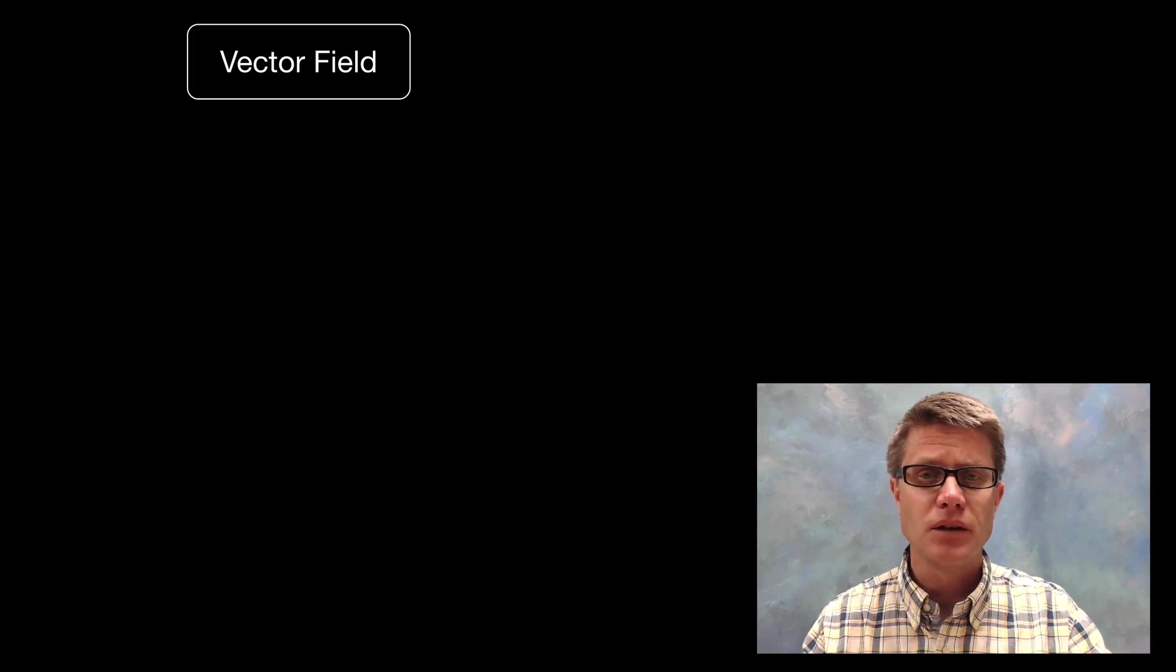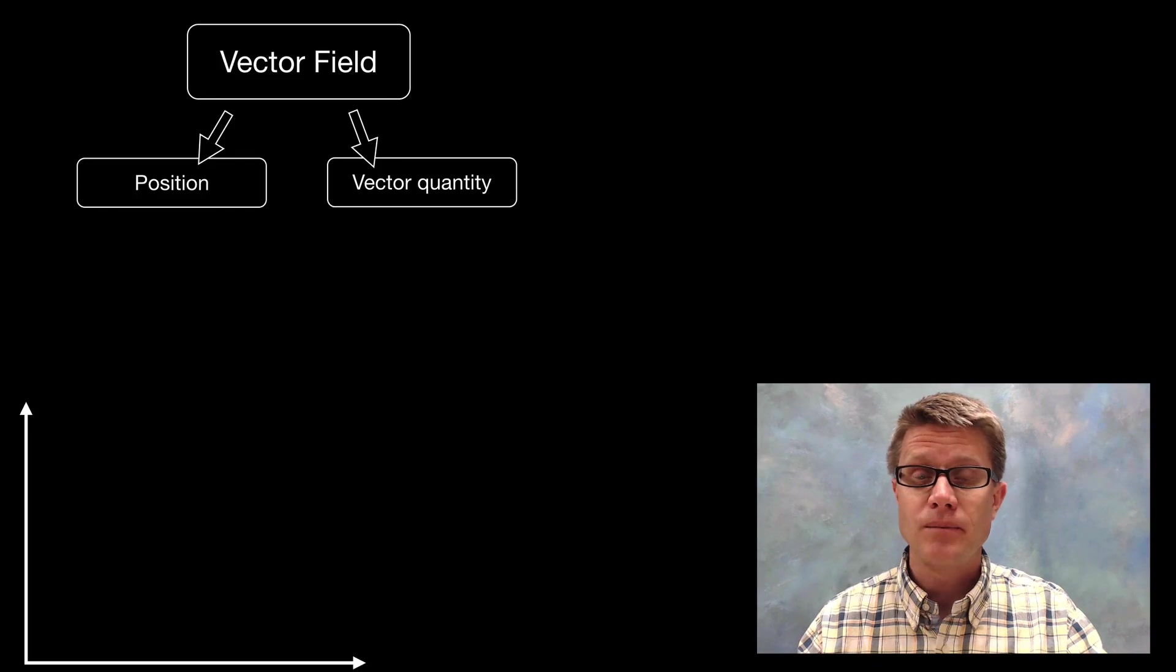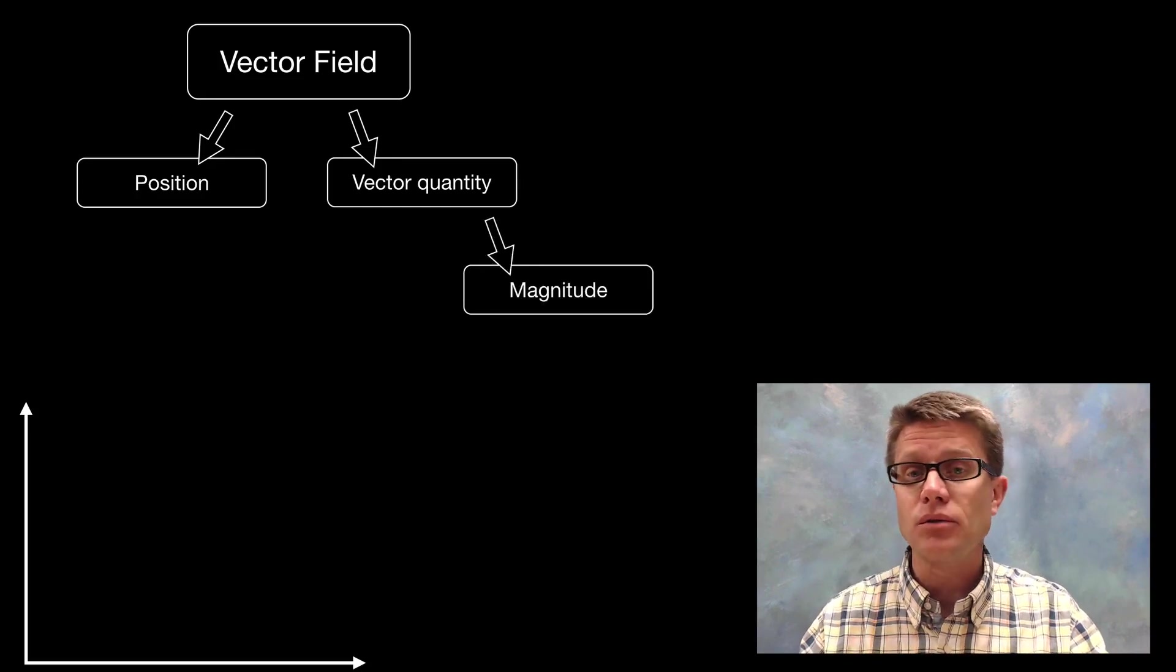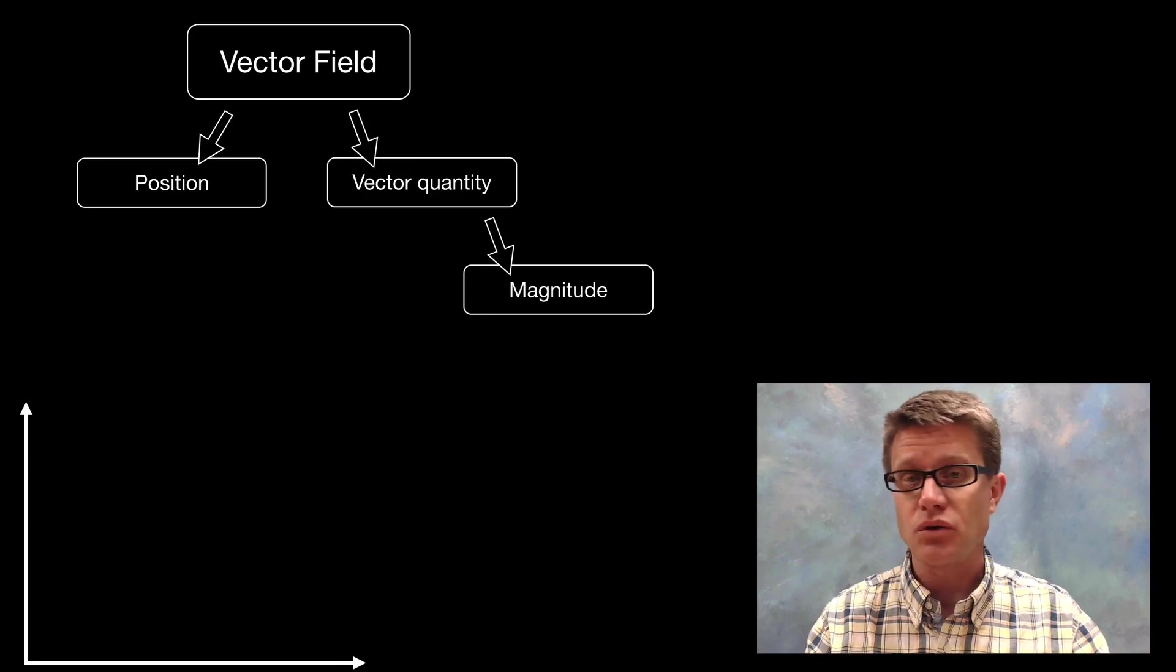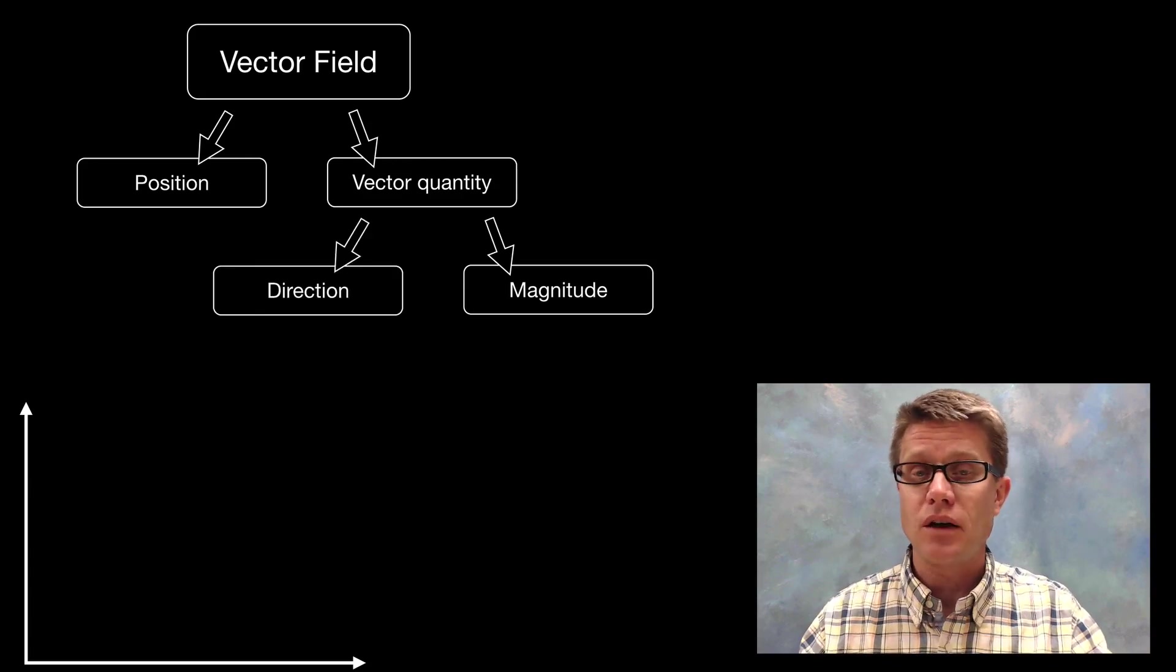So what is a vector field? It shows the position in two or three dimensions of a vector quantity. Vectors are different from scalars. Vectors have not only a magnitude of a force or a velocity, but they also show the direction in which that force is pointing.